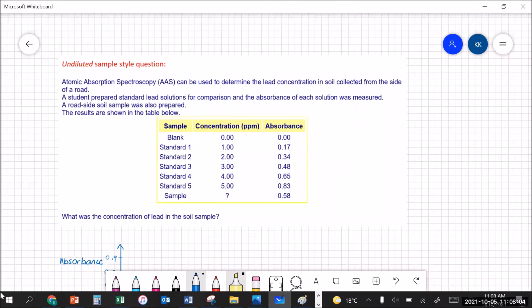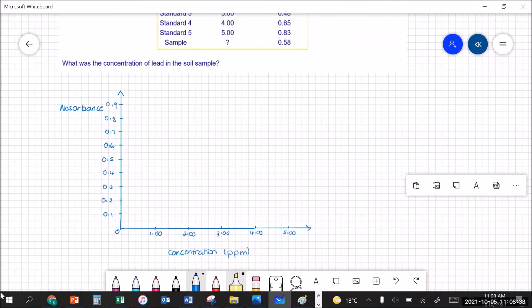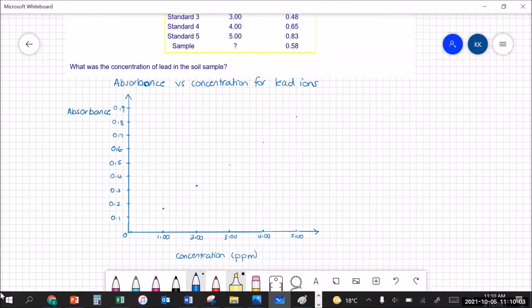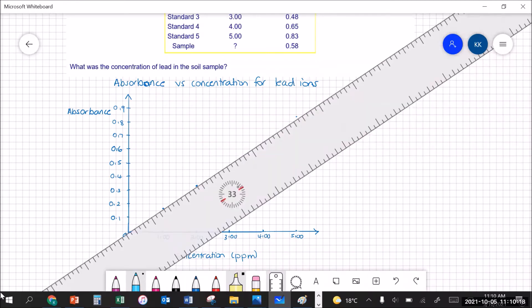So a student prepared standard lead solutions for comparison and the absorbance of each solution was measured. A roadside soil sample was also prepared and the results are shown in the table. Calculate the concentration of lead in the soil sample. Okay so the first thing you're going to need to do is construct a calibration curve. So you need to be looking at absorbance versus concentration for lead ions. So if we graph all of our points now we need to draw the line of best fit. I'm going to make sure it passes through zero zero because it is a proportional relationship.